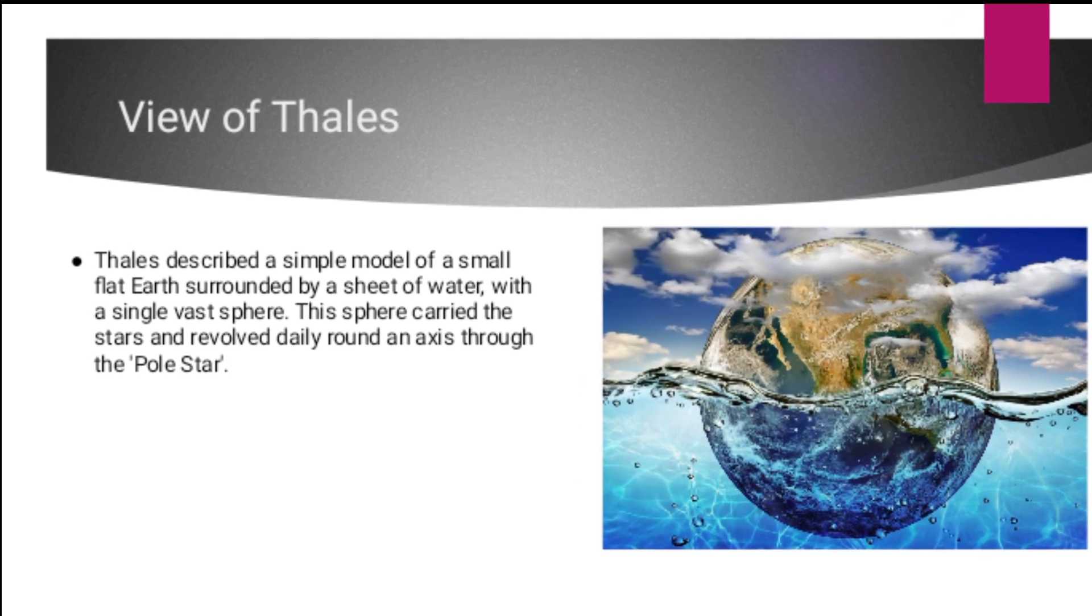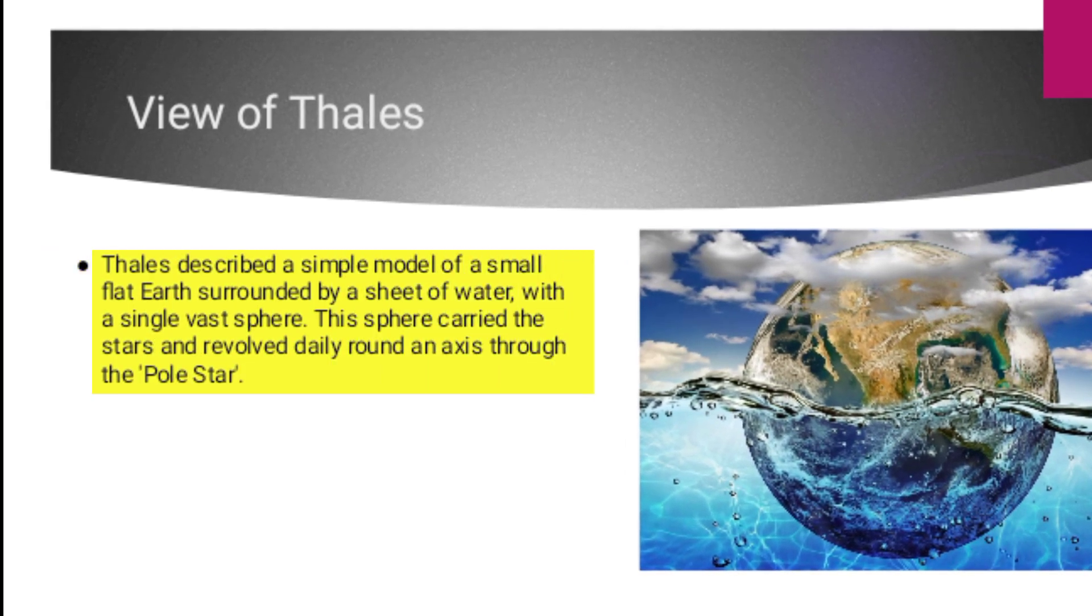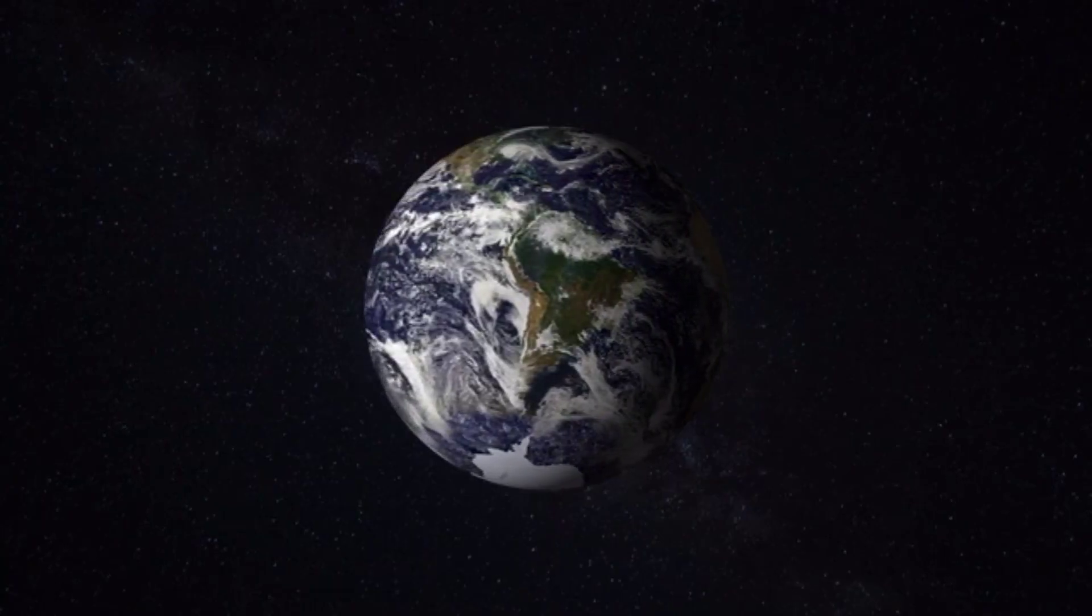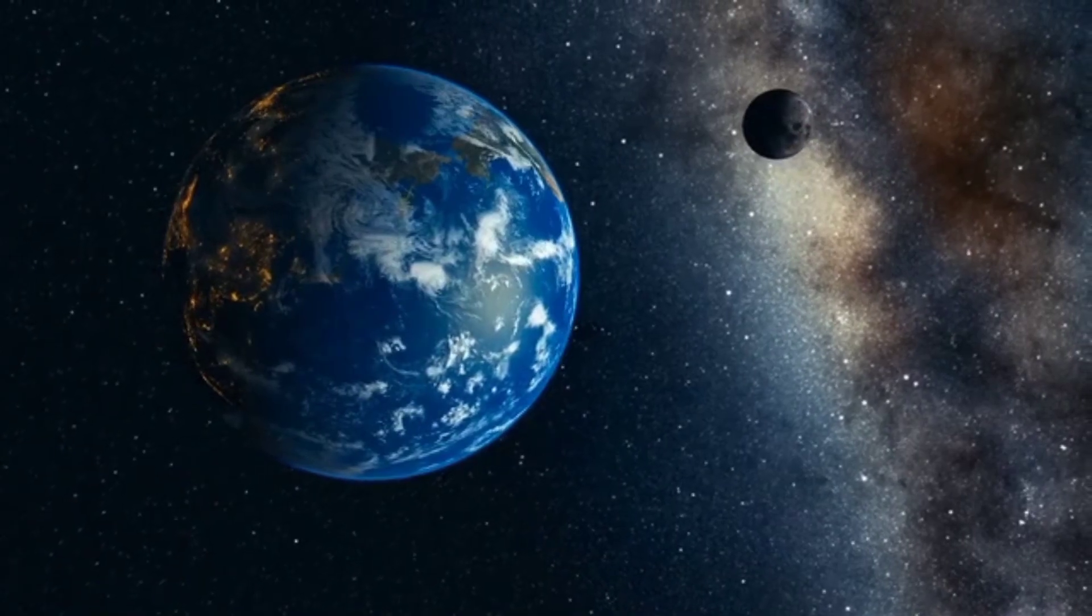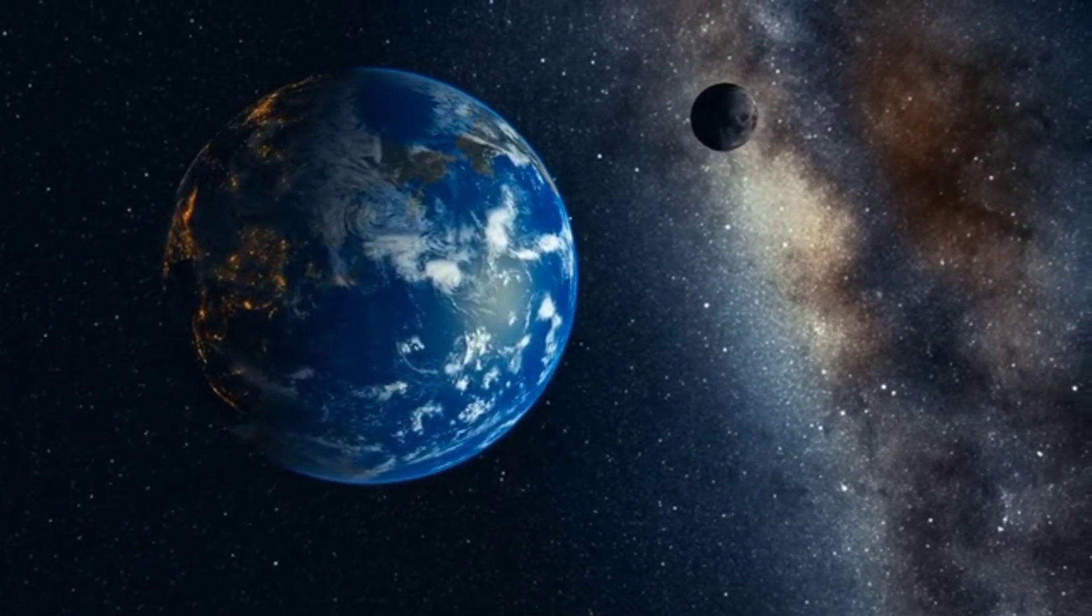The view of Thales: Thales has a simple model of a small flat earth surrounded by a sheet of water with a single vast sphere. This sphere carried the stars and revolved daily around an axis through the pole star. He said the ground is flat and lies on top of the water, with the vault revolving around the axis.